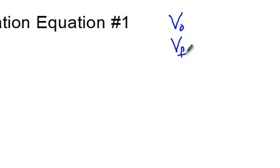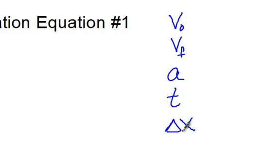We're going to use that relationship to come up with our first constant acceleration equation. Our constant acceleration equations relate five different variables: initial velocity, final velocity, acceleration, displacement, and time. This first relationship looks at initial velocity, final velocity, acceleration, and time — it does not include displacement.